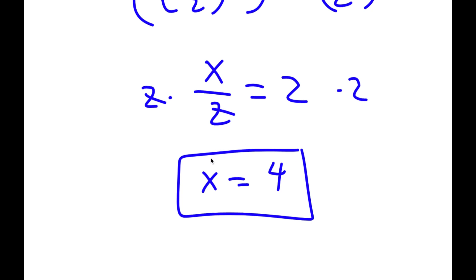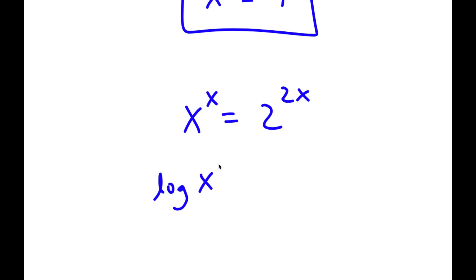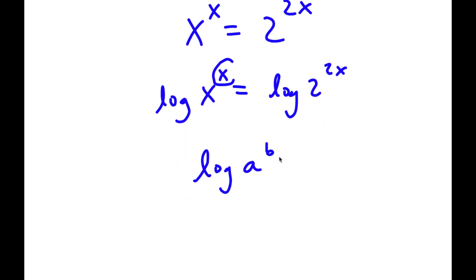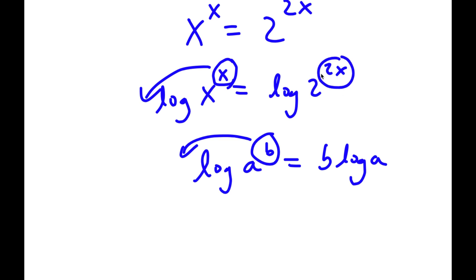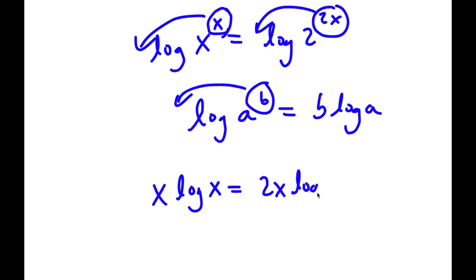Now I have a second method of solving this problem. I have x to the power of x is equal to 2 to the power of 2x. This time I'm going to take the log on both sides. So I have log of x to the power of x is equal to log of 2 to the power of 2x. Using the log power rule, I can move the exponent to the front: x times log x is equal to 2x times log 2.